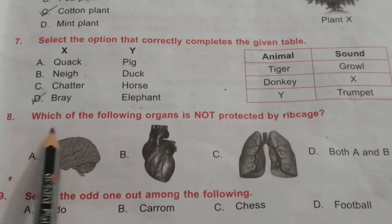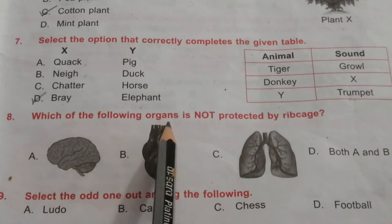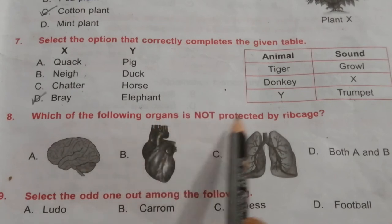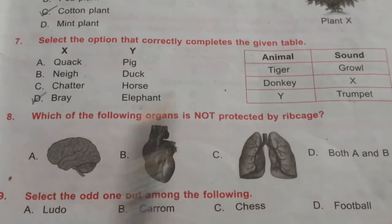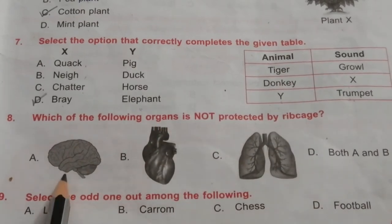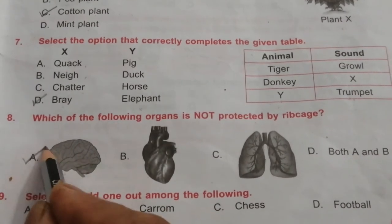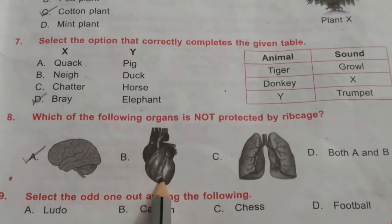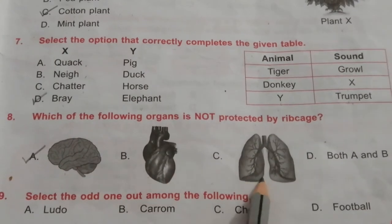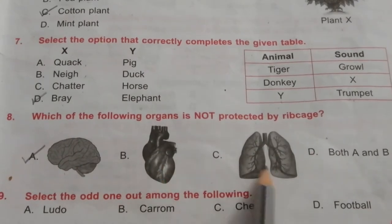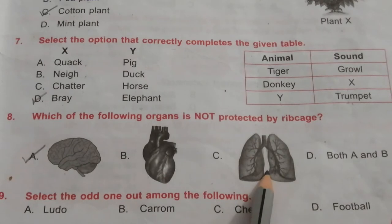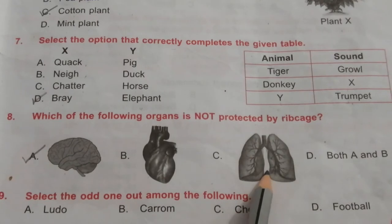Question 8: Which of the following organs is not protected by the ribcage? The brain is protected by the skull — so brain is the correct answer. The heart and lungs are both protected by the ribcage.